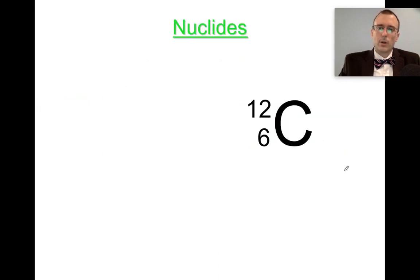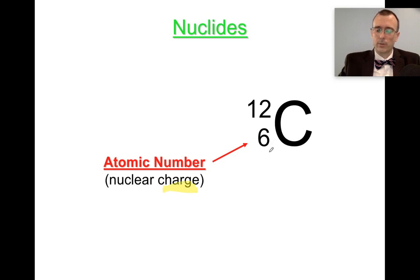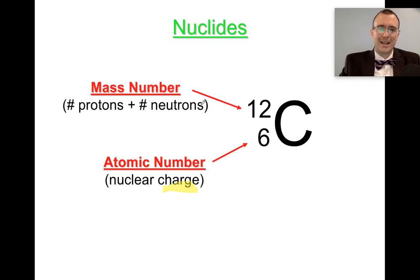Before we talk about how these things work when they break down through nuclear decay, let's review the nuclear notation. The six at the bottom for carbon is known as the atomic number — the number of protons in the nucleus, or the nuclear charge. The 12 at the top for carbon-12 is the mass number, which is the number of protons plus neutrons. So carbon has six protons and, since 12 minus 6 is 6, it also has six neutrons.